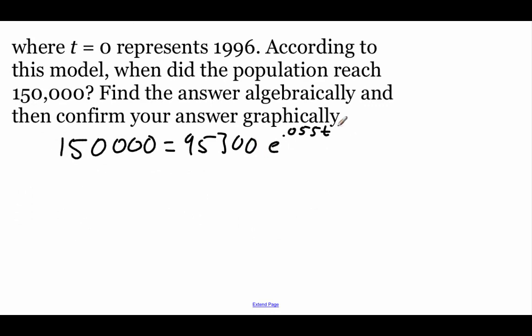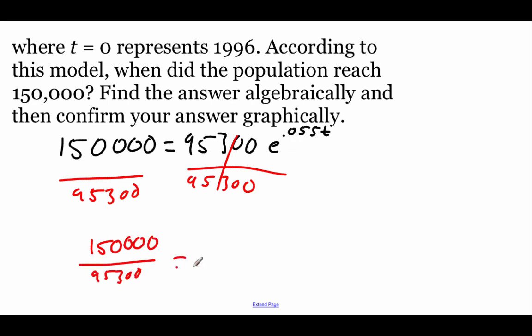Now we're trying to solve for t. We're trying to get t all by itself. So what we'll want to do is move everything else over to the other side, starting with this 95,300. And I'm actually going to wait on typing this stuff into my calculator, otherwise we're going to run into some rounding issues later on. So now our fraction on the left-hand side says 150,000 over 95,300 equals e to the 0.055t power.